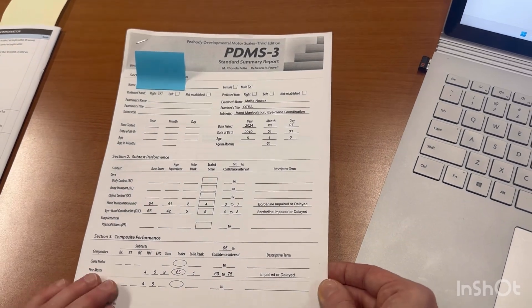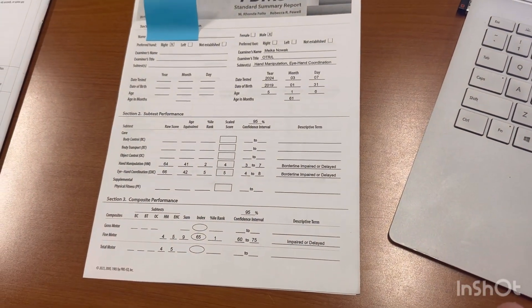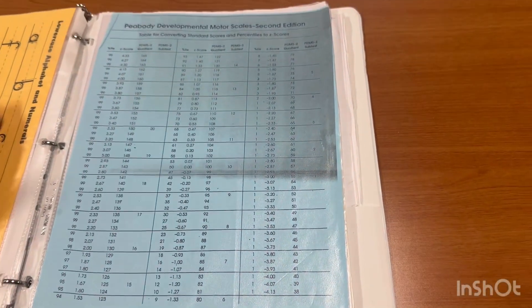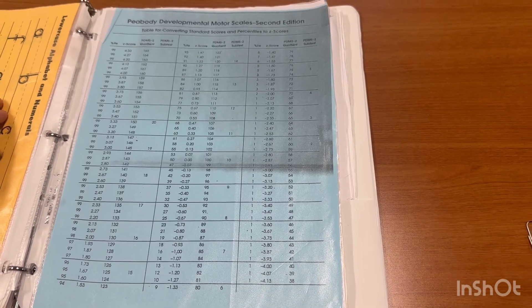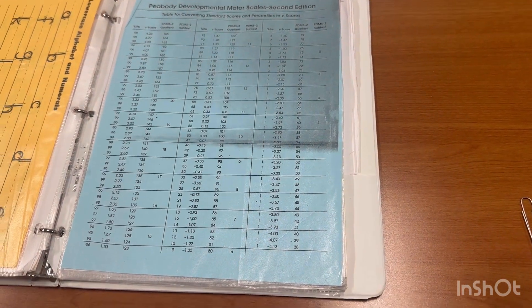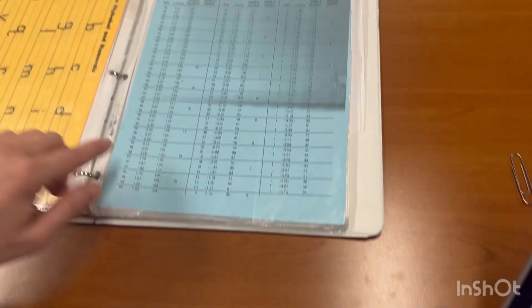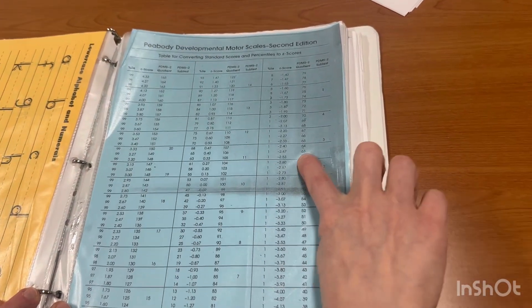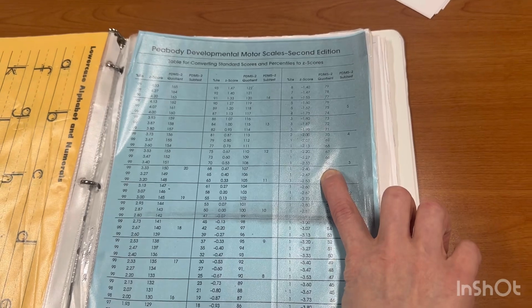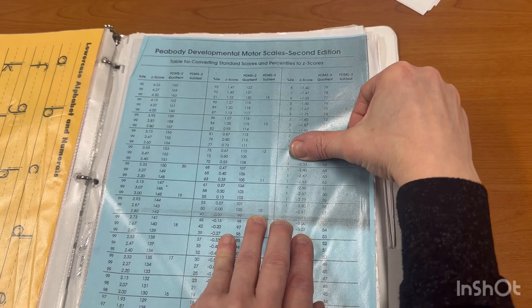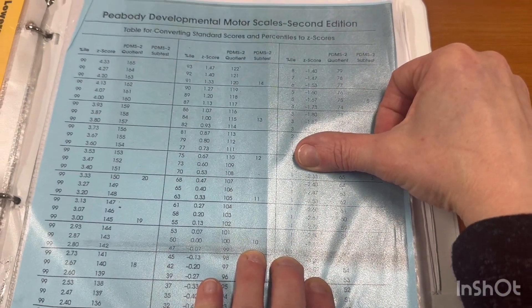Next, I used the scaled scores and determined the standard deviation by using the score of 65 from the index score. That's the composite index, the total, and then I went to a composite of 65 using the Peabody, Peabody 2, and 65 was negative 2.33 standard deviations, and I included that in my write-up.